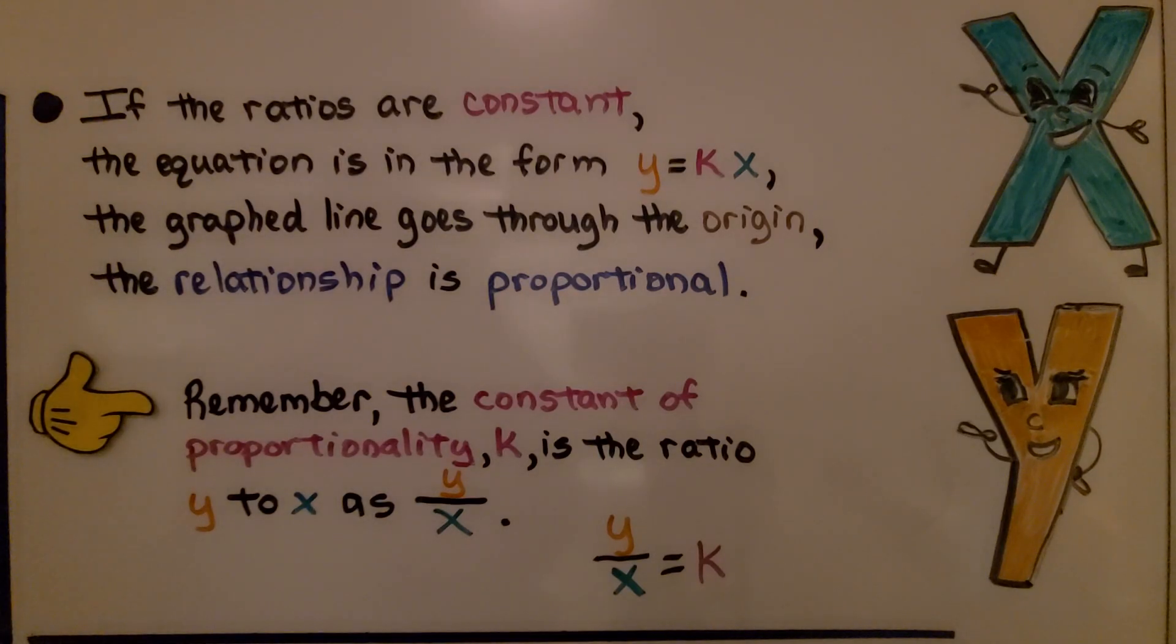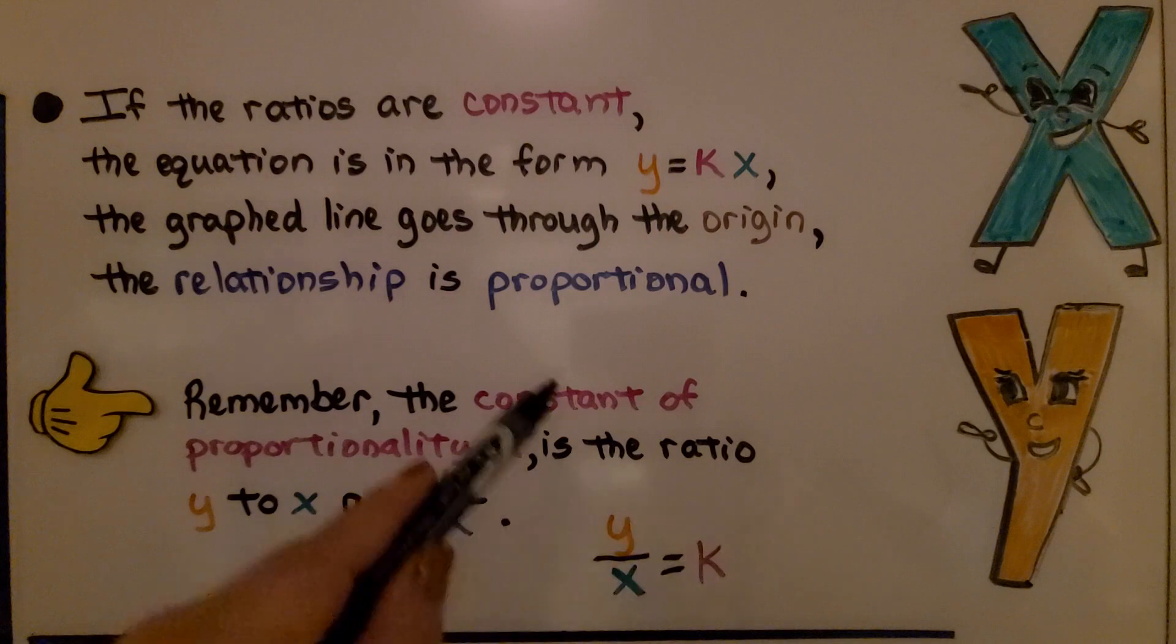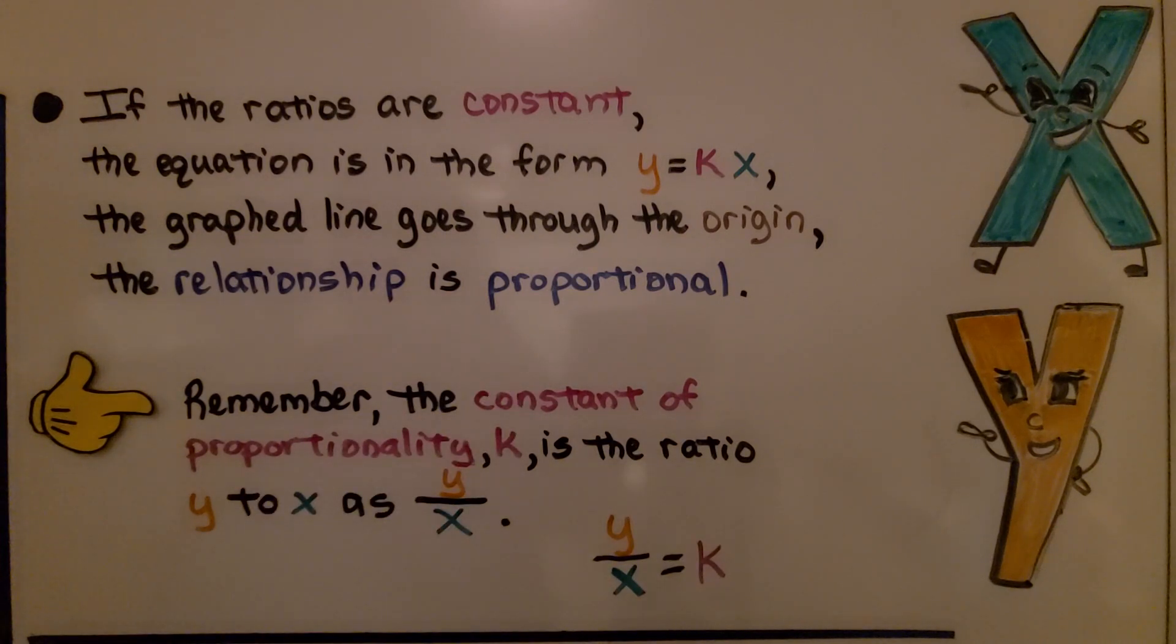If the ratios are constant, the equation is in the form y equals kx, the graphed line goes through the origin, the relationship is proportional. Remember, the constant of proportionality k is the ratio y to x, as y divided by x. y divided by x equals k, that constant of proportionality.